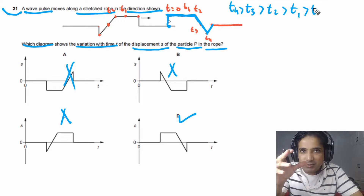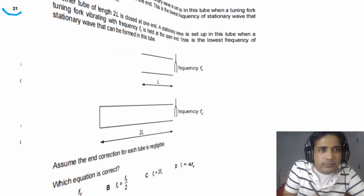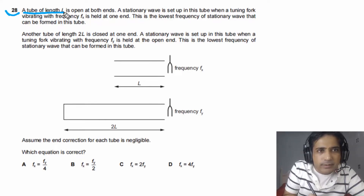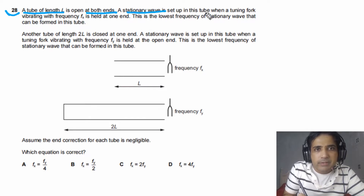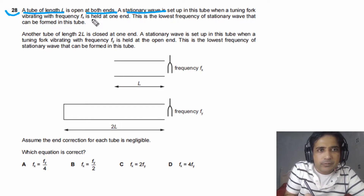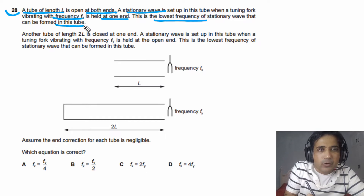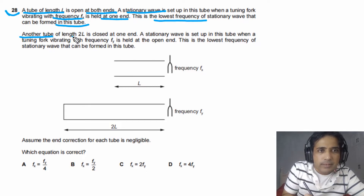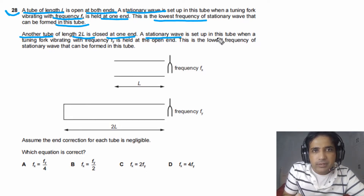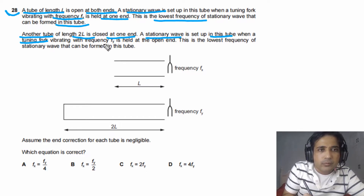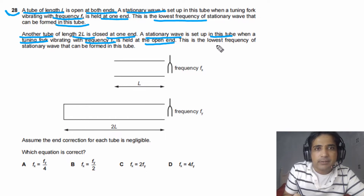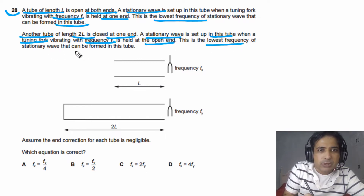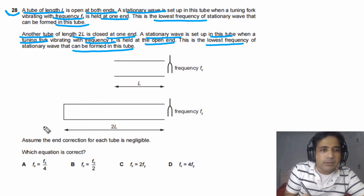I hope question 21 is clear to you. If you have any doubts, leave your questions in the comments. For question 28, a tube of length L is open at both ends. A stationary wave is set up when a tuning fork vibrating at frequency FX is held at one end — this is the lowest (fundamental) frequency. Another tube of length 2L is closed at one end; a stationary wave is set up when a tuning fork vibrating at frequency FY is held at the open end — again the lowest frequency.